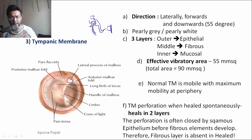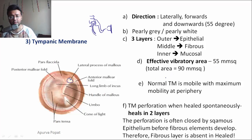The total area of the tympanic membrane is 90 square millimeters, but the effective vibratory area is only 55 square millimeters. The normal tympanic membrane is mobile maximally at the periphery.